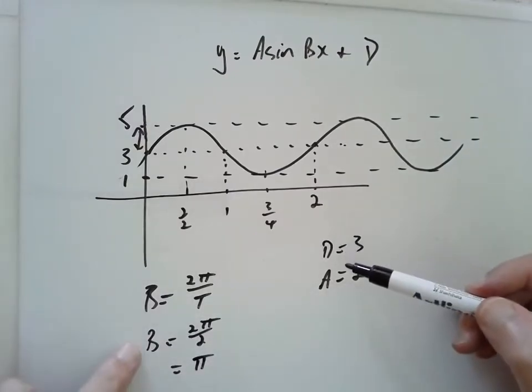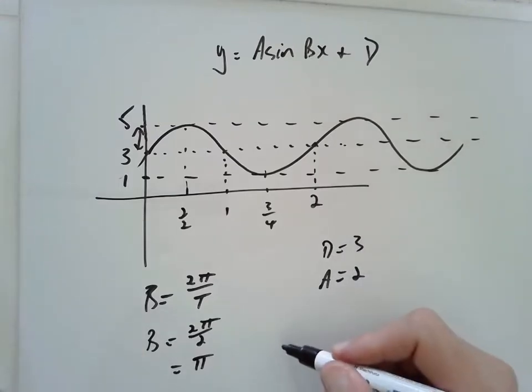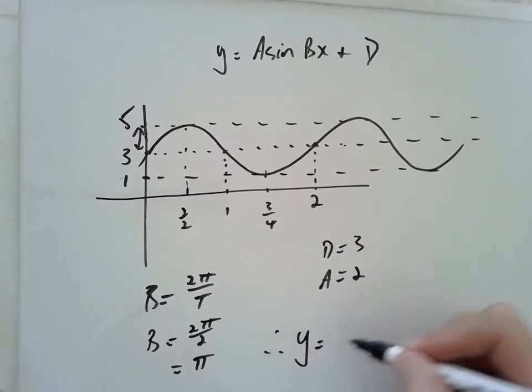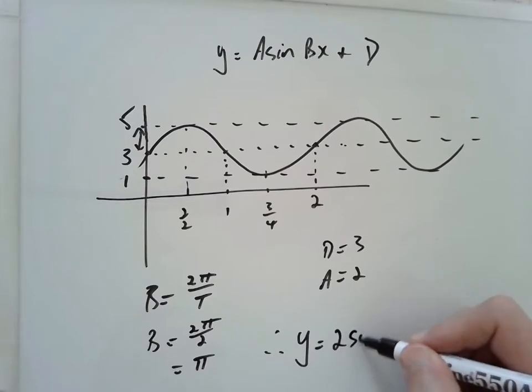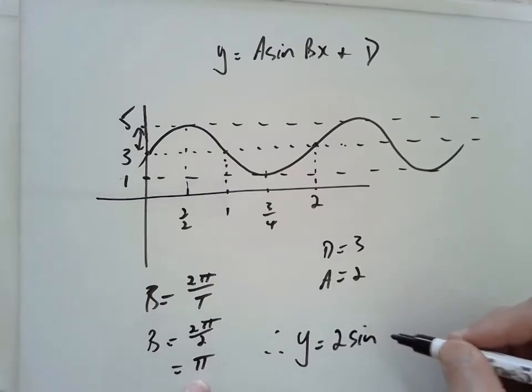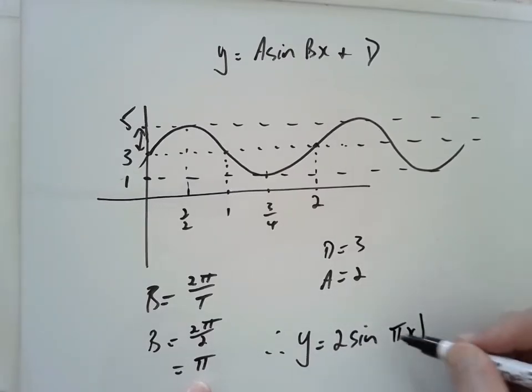So once I've got a, d, and b, I can then go, therefore y equals 2 sin(πx) plus 3.